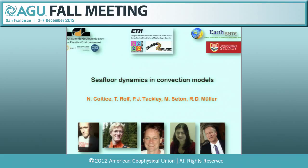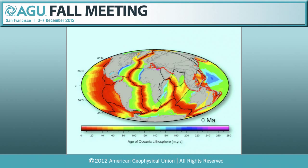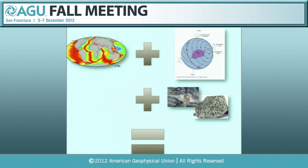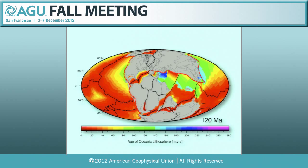This work has been done in collaboration with Tobias Rolf and Paul Tackley from Zurich, and Maria Seton and Dietmar Müller from the University of Sydney. Our tape recorder — our memory — is the distribution of seafloor ages today. With that information we can estimate the heat flow coming out of the Earth, estimate sea level knowing the ocean volume, and estimate tectonic stresses. When you combine this with plate tectonics theory and geological observations, you can extend your memory and go back in time to 120 million years, and even to 250 million years, though that is really our limit.